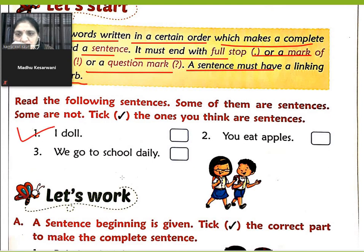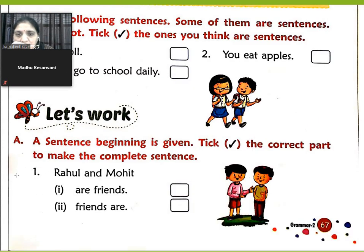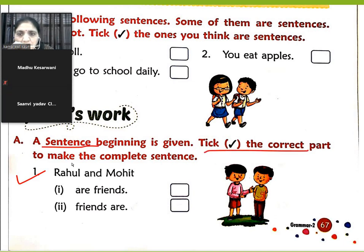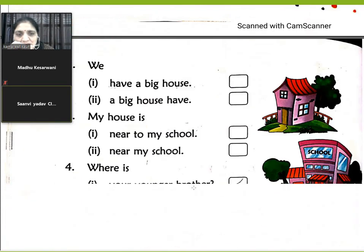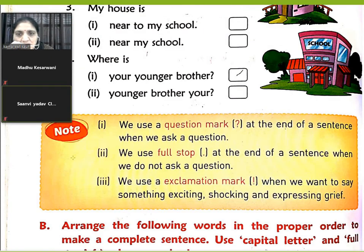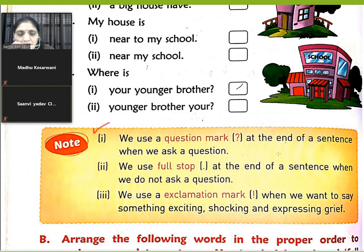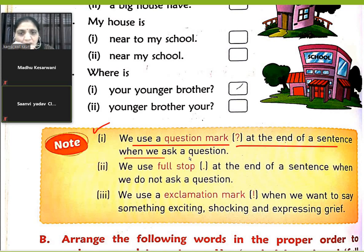The exercise you have done — take the correct part to make a complete sentence. 'Rahul and Mohit are friends.' This exercise has also been done. Note: we use a question mark at the end of the sentence when we ask a question.